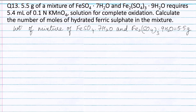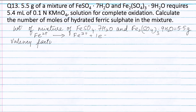KMnO4 present in the mixture oxidizes Fe²⁺ ions of FeSO4·7H2O to Fe³⁺ ions. The valency factor of FeSO4·7H2O is equal to 1, because the change in oxidation number per atom of iron is 1.